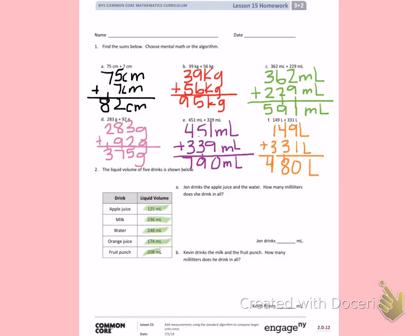Letter A. Jen drinks the apple juice and the water. How many milliliters does she drink in all? So we want to pay attention to the apple juice and the water. If she drinks the apple juice, she drinks 125 milliliters, and if she drinks the water, she has 248 milliliters. We want to find out how much she has. These clue words 'in all' tell me to add. 5 plus 8 is 13. 2 plus 4 is 6, plus 1 more is 7. 2 plus 1 is 3, giving me a total of 373 milliliters. So Jen drinks 373 milliliters.